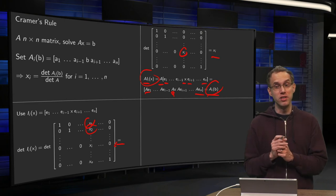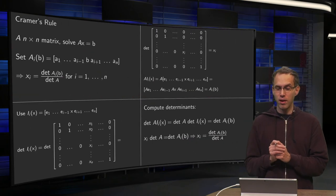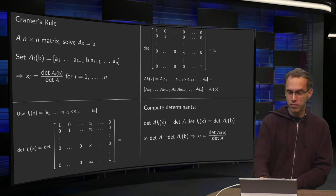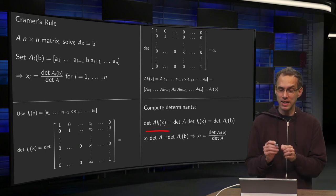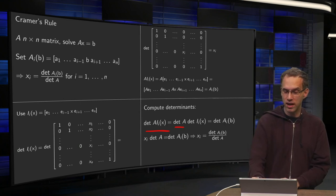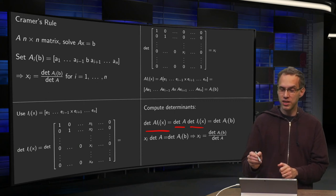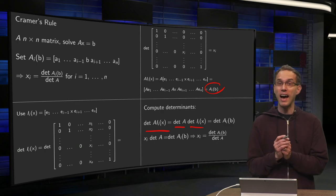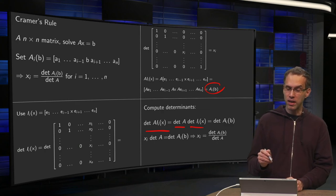Now, how does that help us? Now we are almost done. Now we compute the determinants on left and right. The determinant of A times I_i(x) equals det A_i(b) equals det A times det I_i(x), and it is equal to our determinant of A_i(b). And now we can solve.